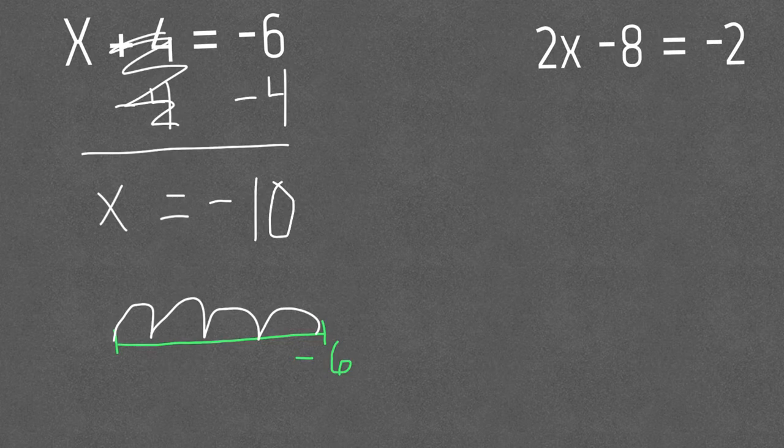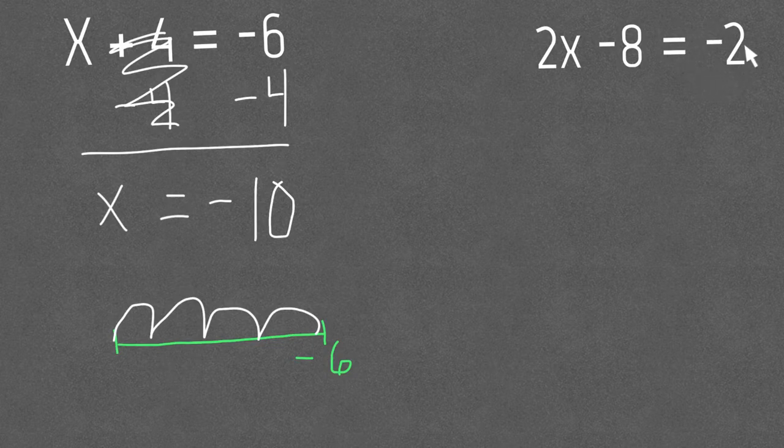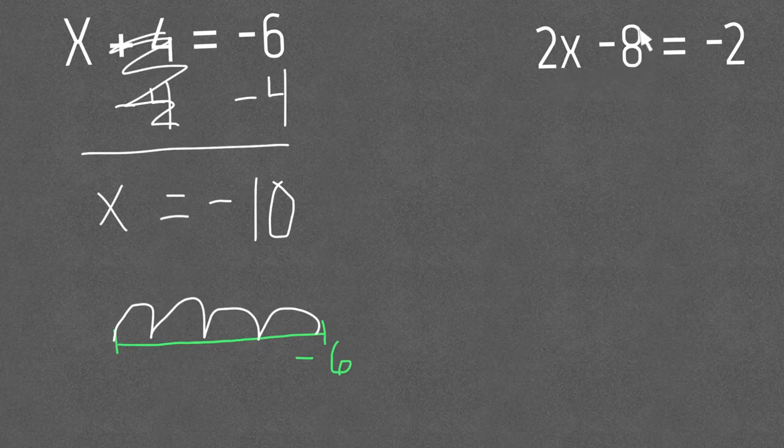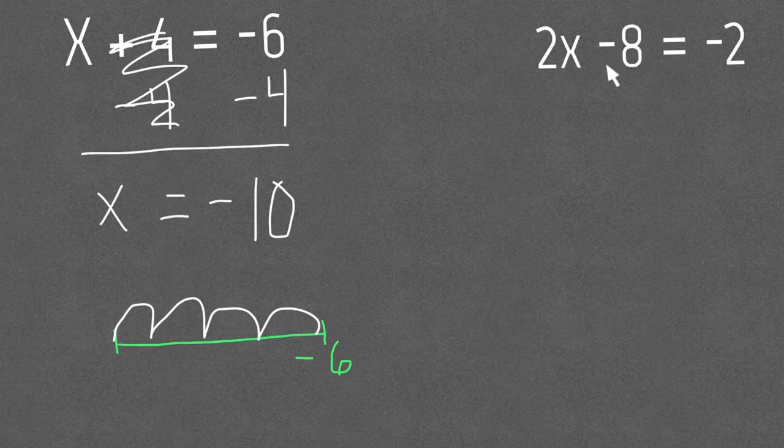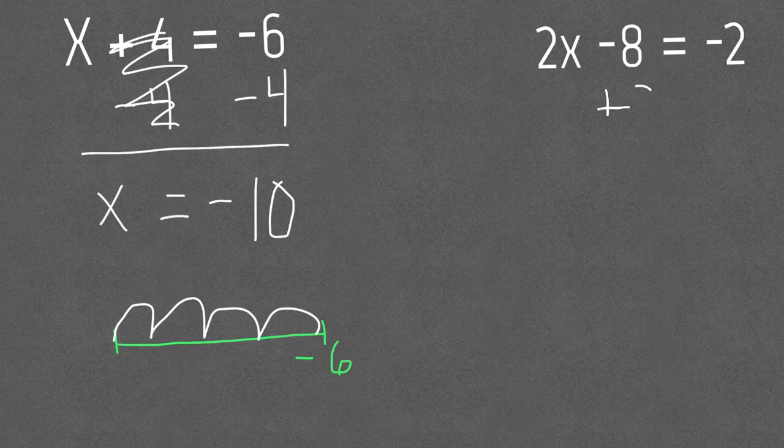All right let's take a look at our other one where we have some negative integers involved. This one is a two-step. So first we're gonna look over here and we're gonna get rid of the part that does not have the variable first. So we are going to do the opposite. We're gonna add 8. So let's write that for both sides.